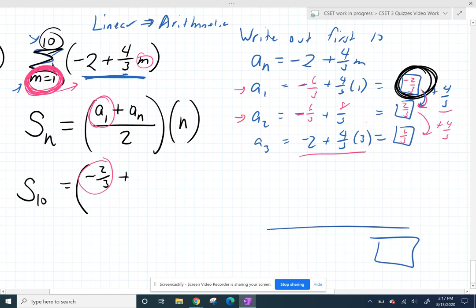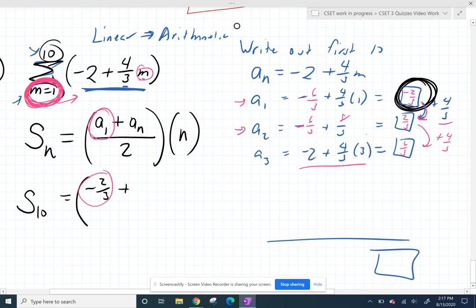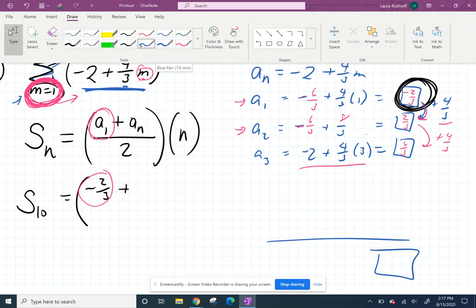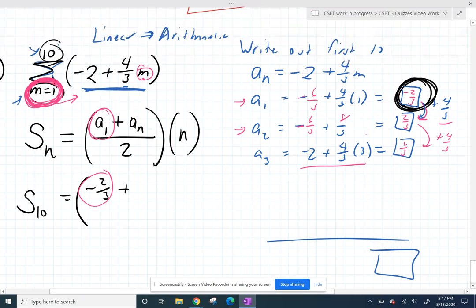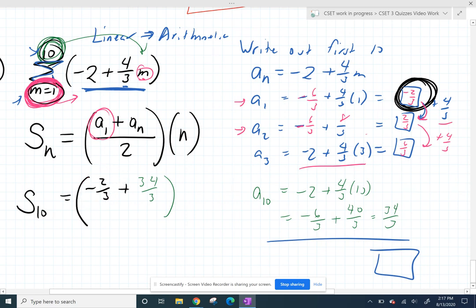And then, so I got that negative two-thirds when I plugged in a one for my m. And then I can always get my last term by plugging in where they tell me to stop. So if I plug in a ten, a sub ten will be negative two plus four-thirds times ten. So that's negative six-thirds, just to get a common fraction right away, plus forty-thirds is positive thirty-four-thirds. Leave it to this worksheet to start you off with fractions, but that's okay.